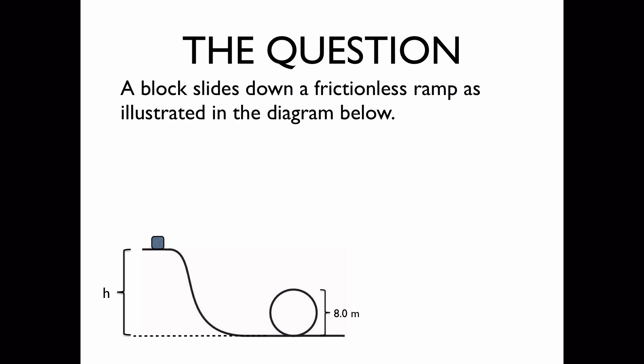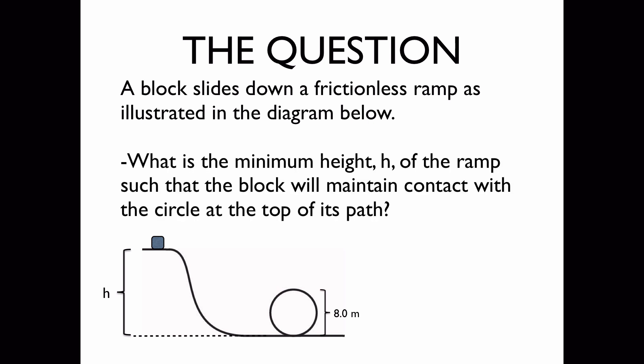The question. A block slides down a frictionless ramp and passes through a loop-de-loop as illustrated in the diagram below. We'd like to know what is the minimum height h of the top of the ramp where the block starts out such that the block will maintain contact with the circle when it's at the top of its path.